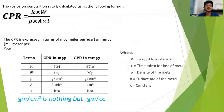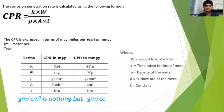The corrosion penetration rate is calculated using the following formula: CPR = K × W / (ρ × A × T), where W is the weight loss of a metal, T is the time taken for loss of metal, ρ (rho) is the density of the metal, A is the surface area of the metal, and K is a constant. The CPR is expressed in terms of MPY and MMPY — that is, MPY means mils per year and MMPY means millimeters per year.